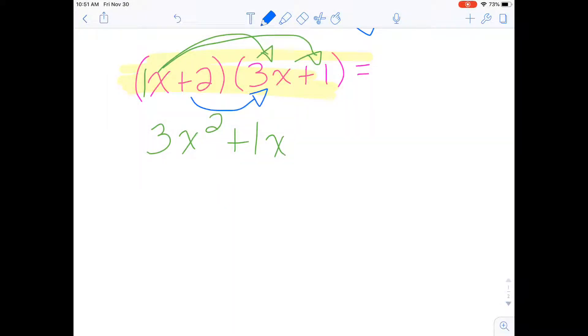Positive 2 times 3x is positive 6x. And then positive 2 times positive 1 is positive 2.